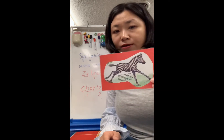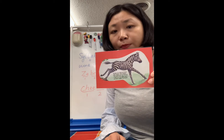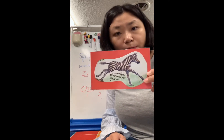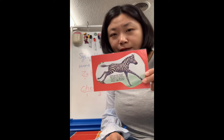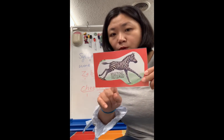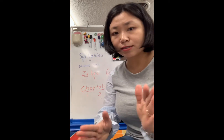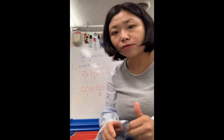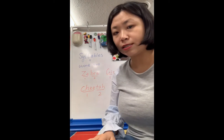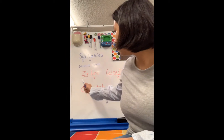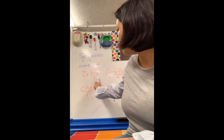So the first one we have is zebra. How many parts did you hear from the word zebra? Let's clap our hands. Ze-bra. Ze-bra. You're right, there are two syllables in zebra.